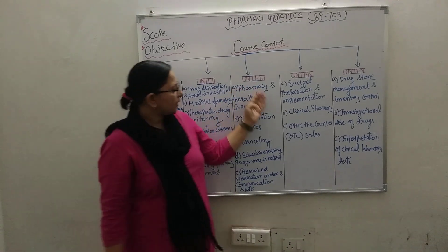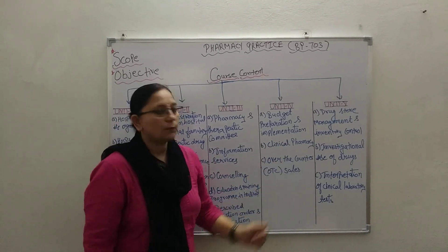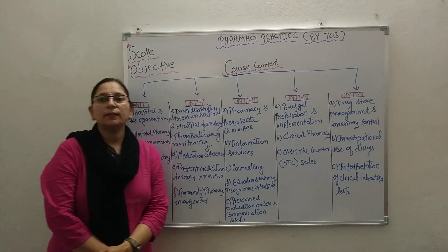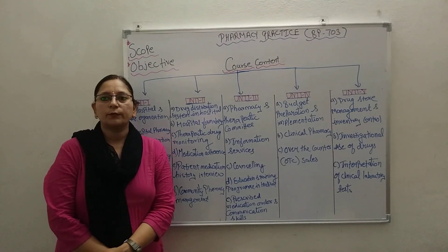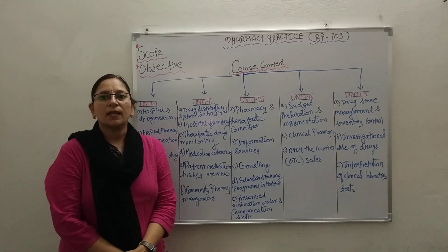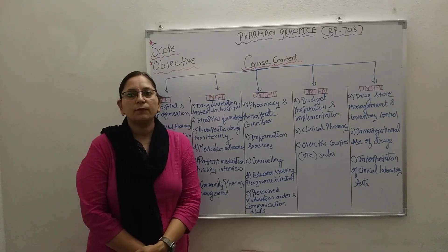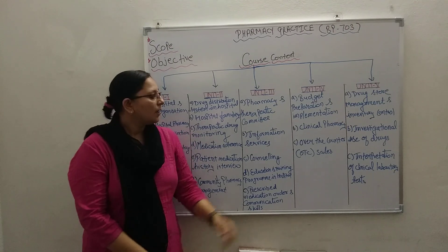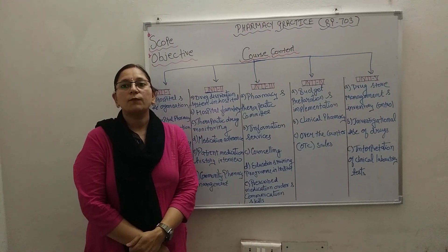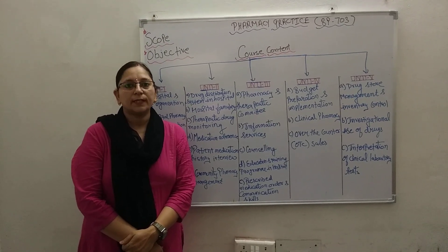In Unit 4, it comprises three parts: budget preparation and implementation, clinical pharmacy, and over-the-counter sales. In budget preparation and implementation, we will learn how to prepare and implement a budget. In clinical pharmacy, we will learn about the introduction and concept of clinical pharmacy, functions and responsibilities of clinical pharmacists, and drug therapy monitoring. In over-the-counter sales, we will cover the introduction, sale of over-the-counter medications, and rational use of common OTC medications.